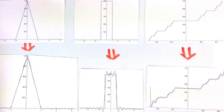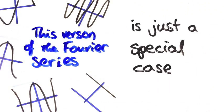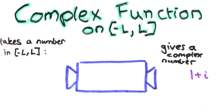I have no idea. What's even cooler is that this version of the Fourier series is merely a special case of an even more powerful one. Suppose you have a complex valued function on the interval negative L to L. By that, I mean a function that only takes real numbers between negative L and L as inputs, but returns complex numbers.